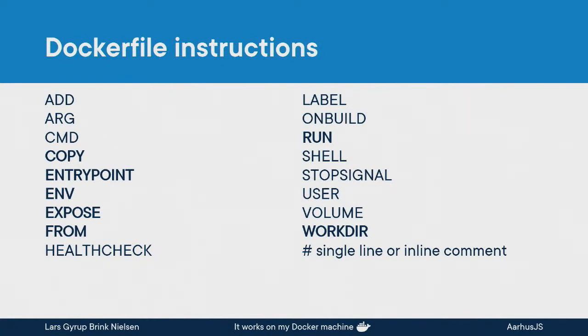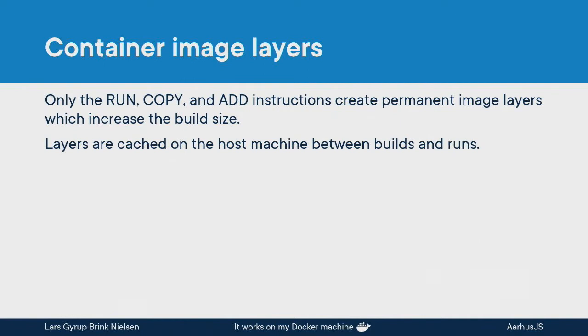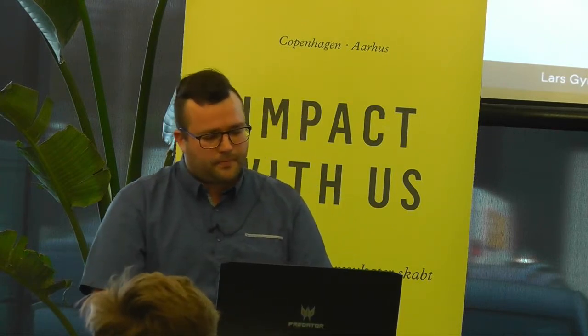These should be all the instructions for the Dockerfile, and we'll briefly look at the ones highlighted in bold. Only the RUN, COPY, and ADD instructions will create different layers that are cached between builds. It used to be that more of them did that, but they've been optimized so that only these three commands will add an additional layer to the image.